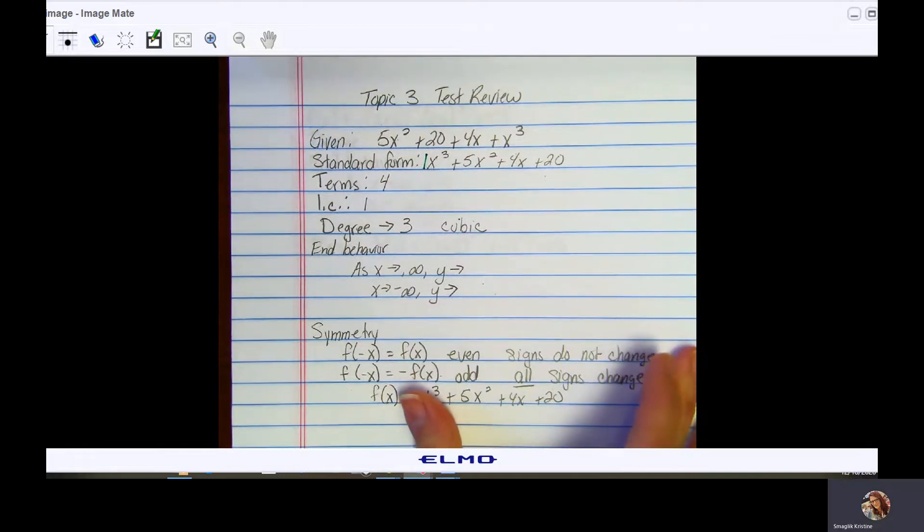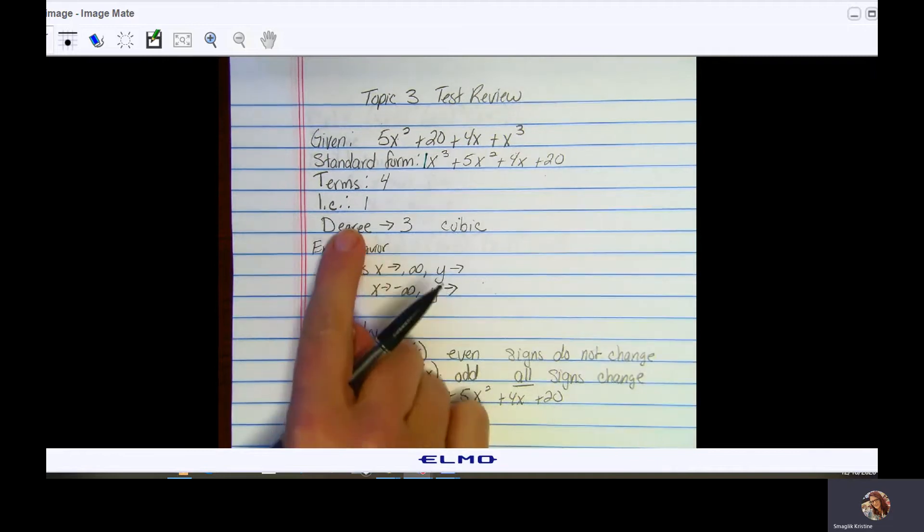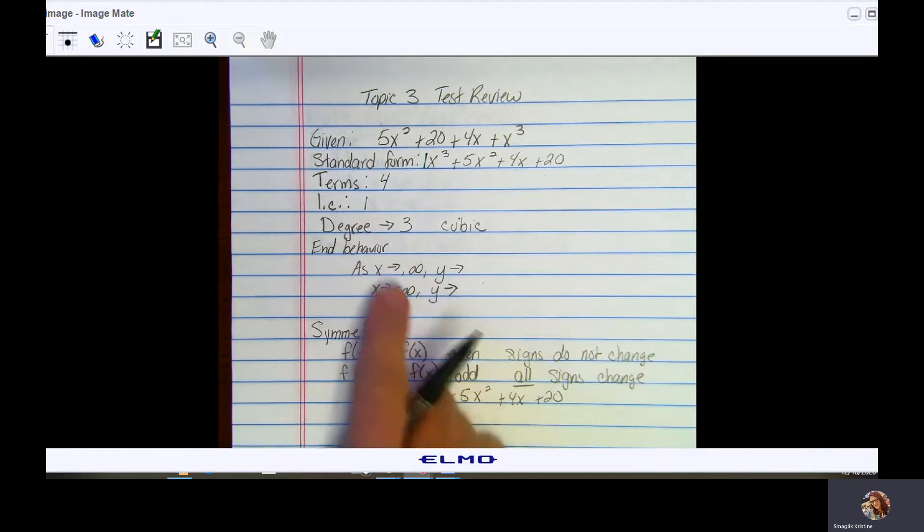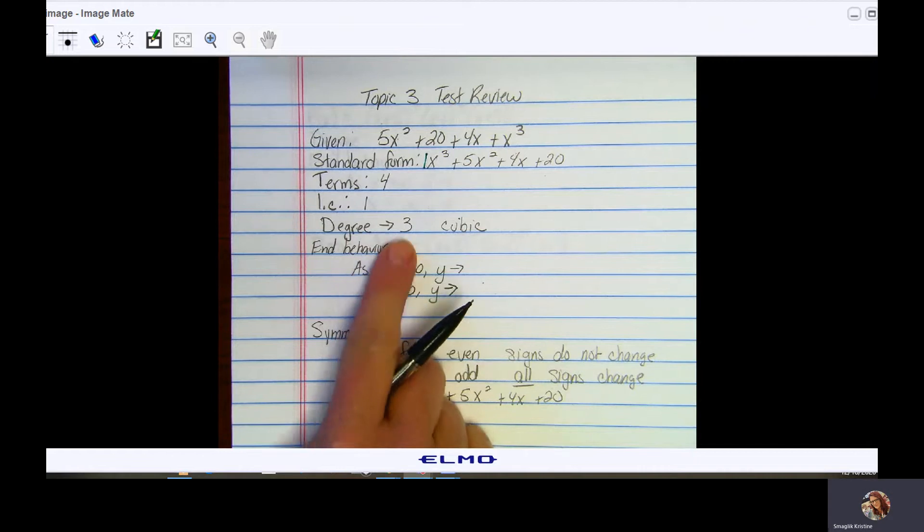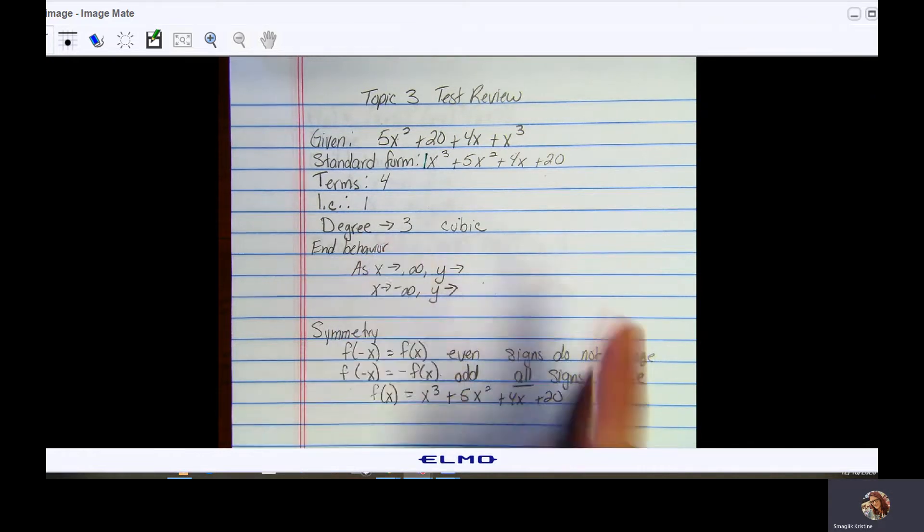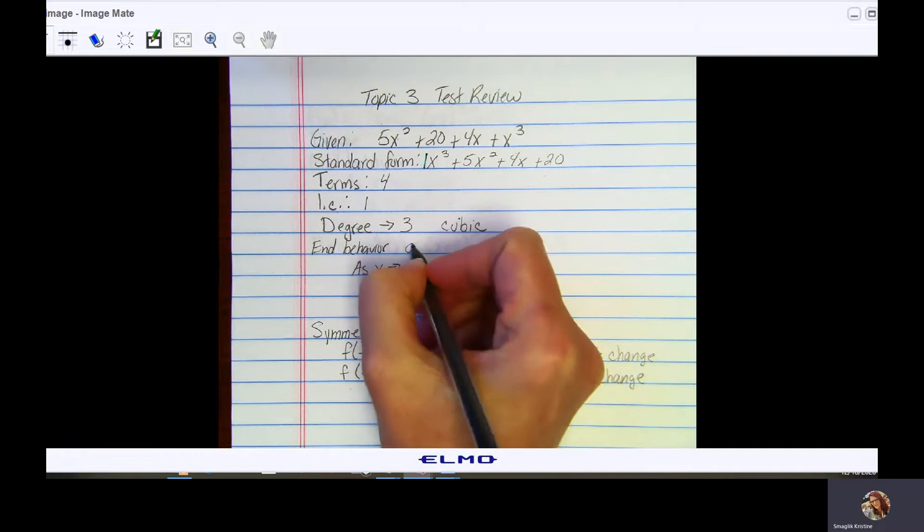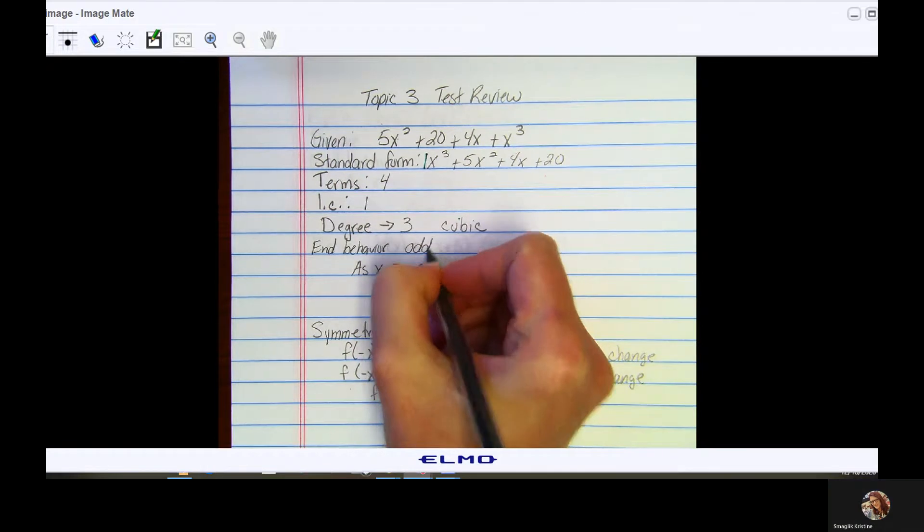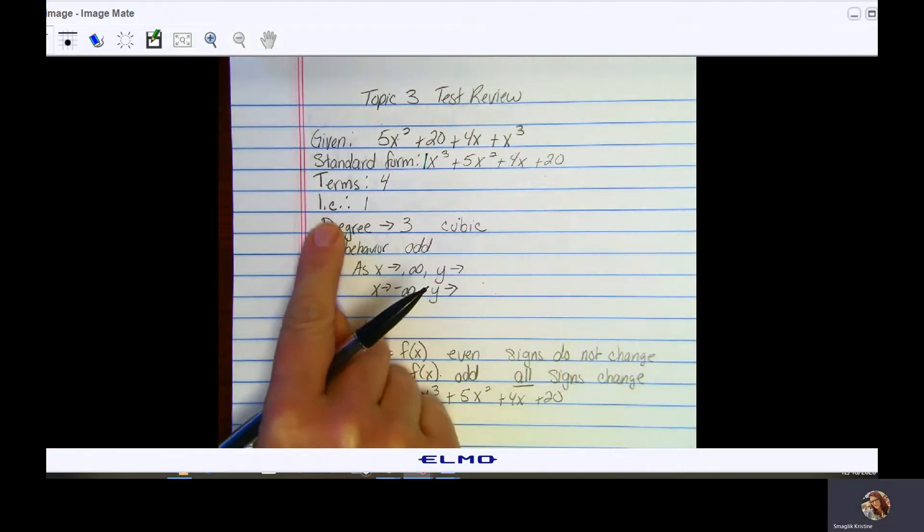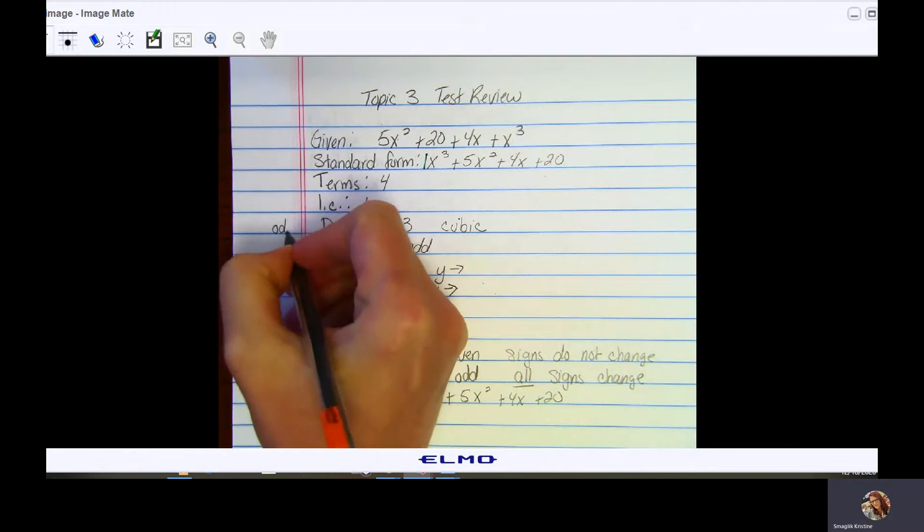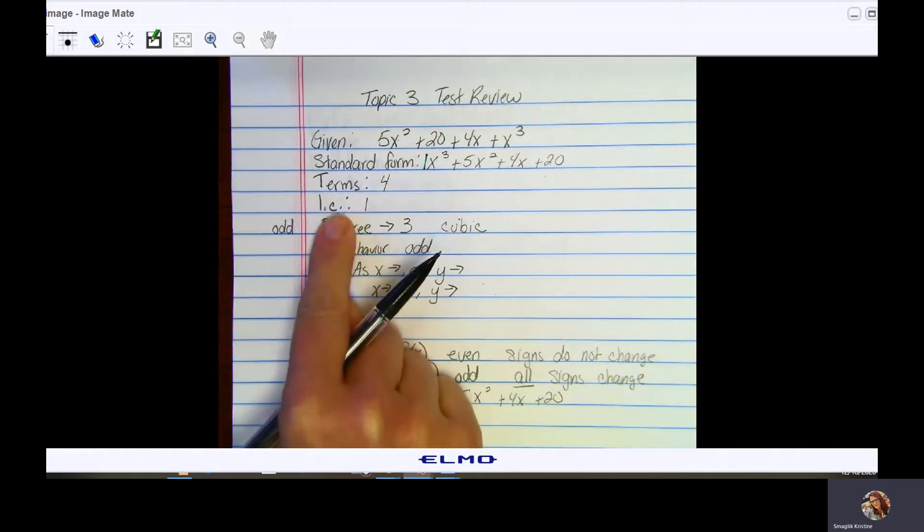Now end behavior. End behavior is dependent on degree and leading coefficient. First you look at your degree. Your degree is 3, which is an odd number, so it is odd. When it comes to looking at your leading coefficient, notice it's positive.